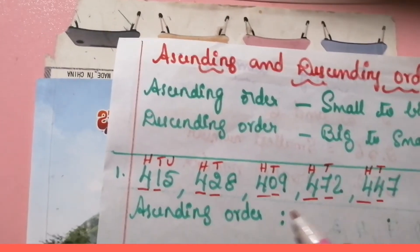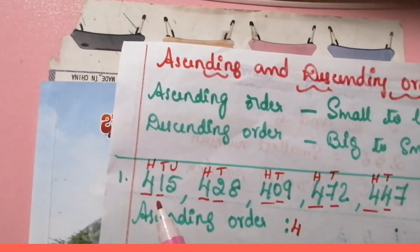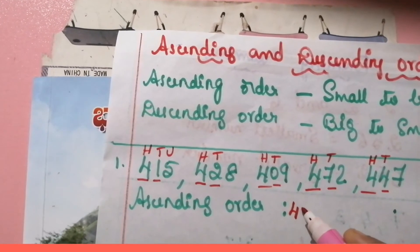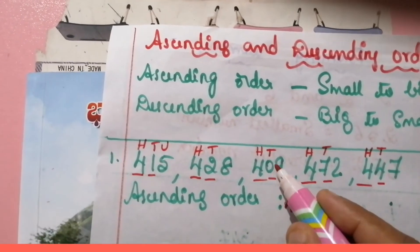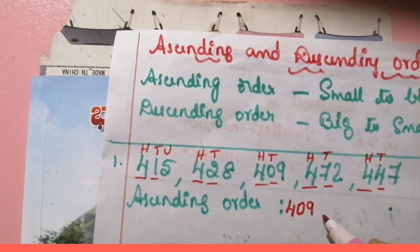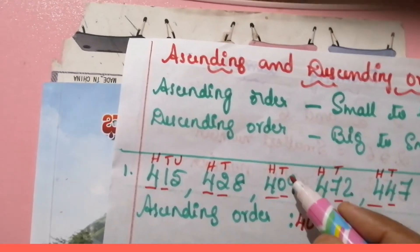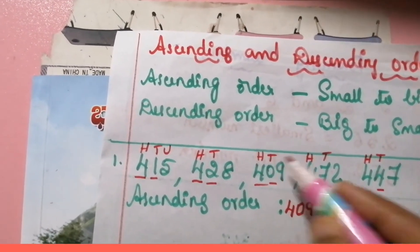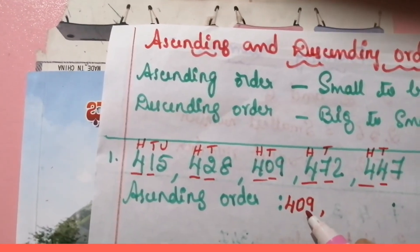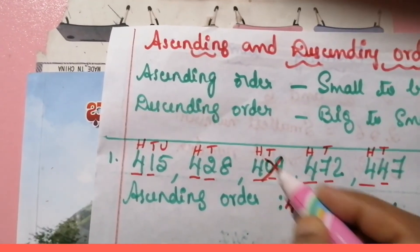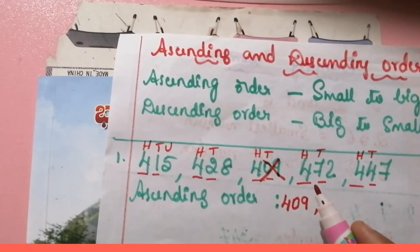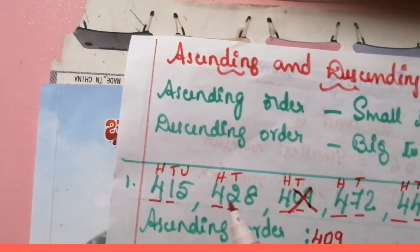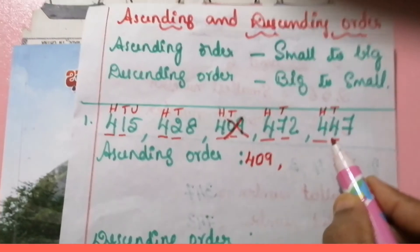Which is the smallest number? So zero tens is the smallest, meaning we can write four hundred and nine first, and we cross it out. Now we will look into the next digits: four hundred and fifteen, four hundred and twenty-eight, four hundred and seventy-two, and four hundred and forty-seven.